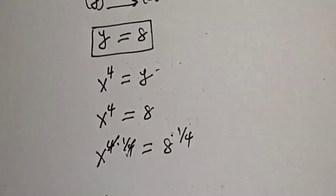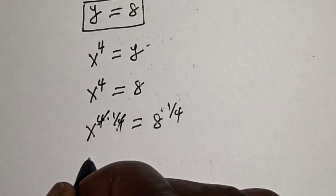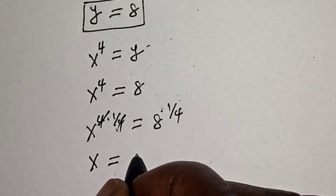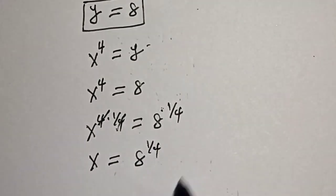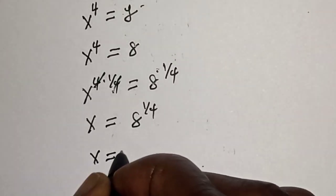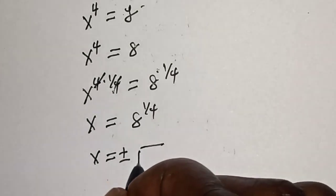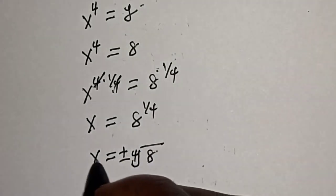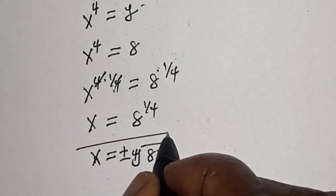This one will cancel this. So s is equal to h raised to power 1 over 4. Then s is equal to plus or minus the 4th root of h. That is our final answer.